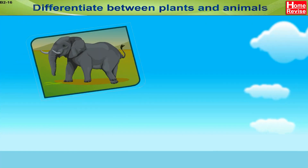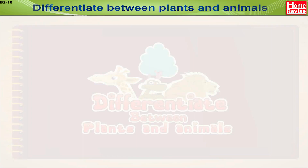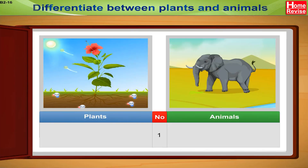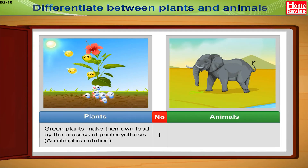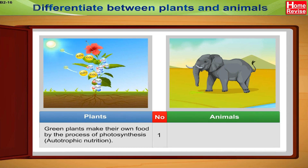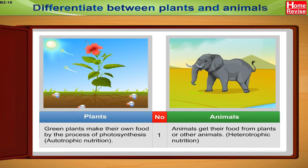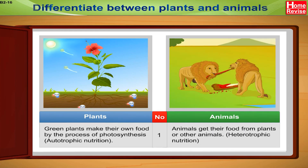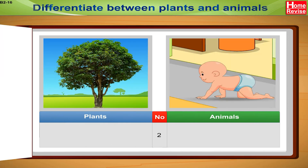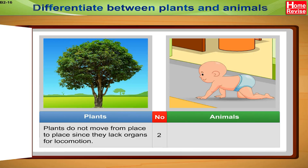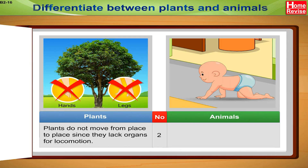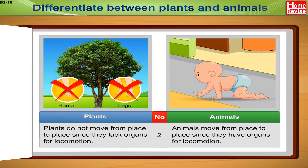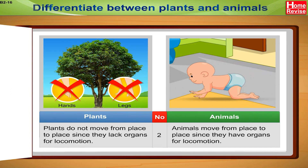Differentiate between plants and animals. 1. Green plants make their own food by the process of photosynthesis — called autotrophic nutrition — whereas animals get their food from plants or other animals — called heterotrophic nutrition. 2. Plants do not move from place to place since they lack organs for locomotion, while animals move from place to place since they have organs for locomotion.